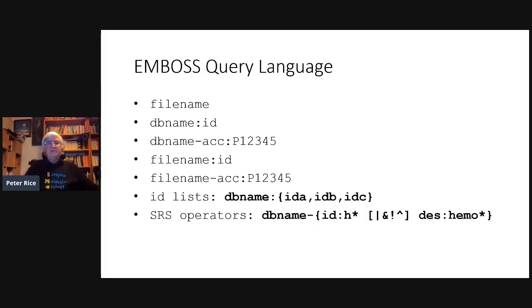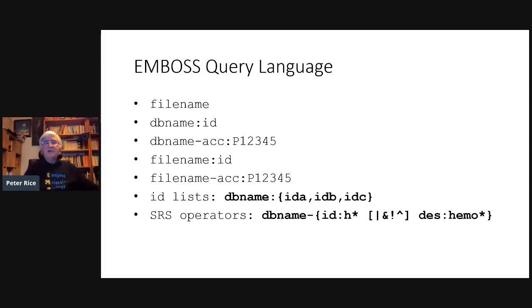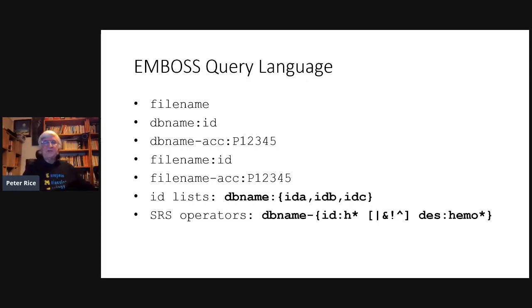If you had a database defined with an index somewhere, you could define the database name and the identifier, or a field like the accession number, and it would go retrieve it. You could apply those to file names as well — if a file had more than one sequence, you could pull one by ID or accession. We extended that in more recent versions to have a list of identifiers, with combining operators like ANDs, ORs, and NOTs.